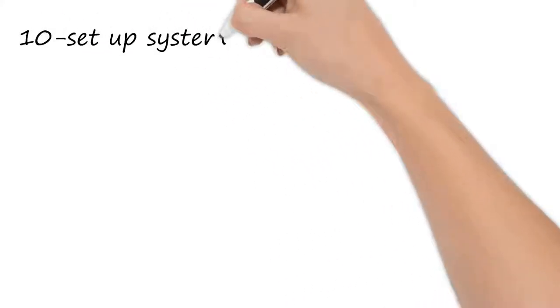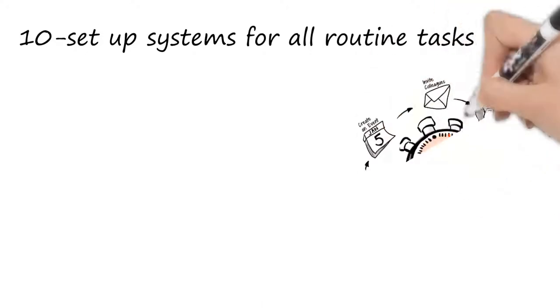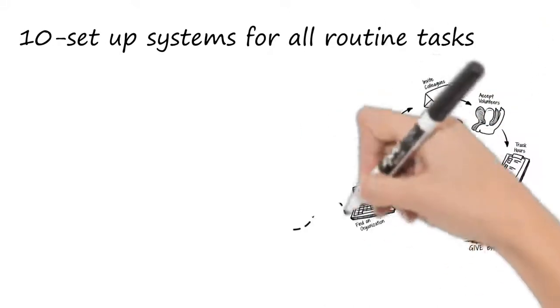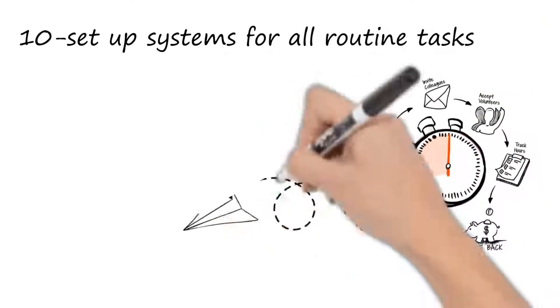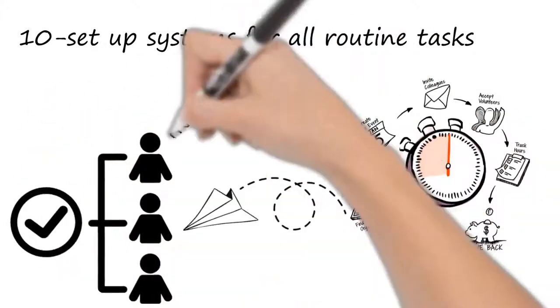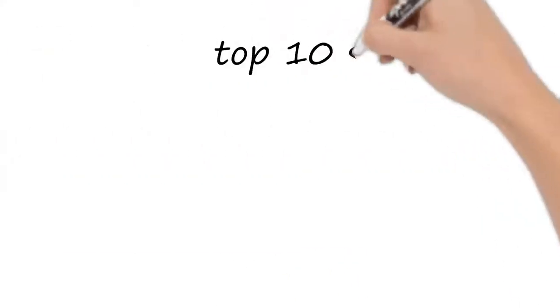And then my tenth suggestion is that everything routine should have a system. So set up systems for routine tasks. So if you keep getting the same inquiry or the same problem or whatever, set up a system so you can either automate it or delegate it to somebody cheaper than you. So there should be no routine tasks being done regularly by you. So there we are. Those are my top ten suggestions.